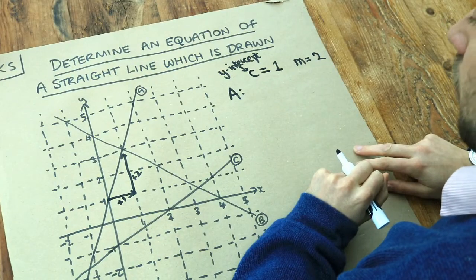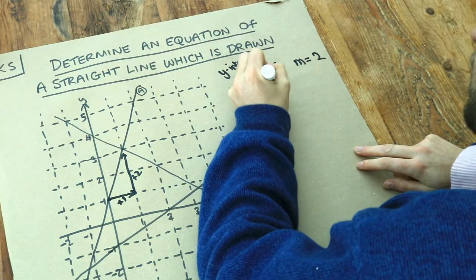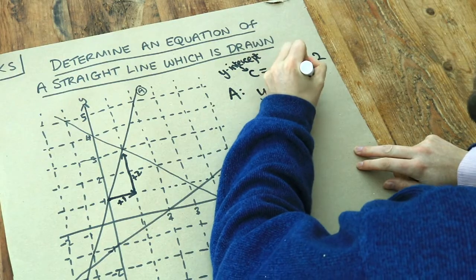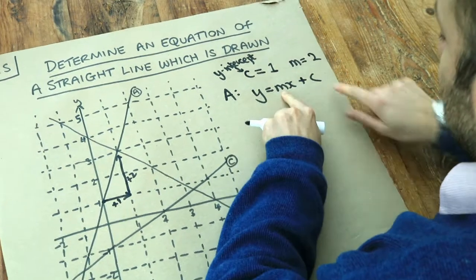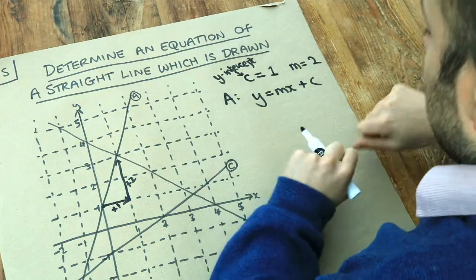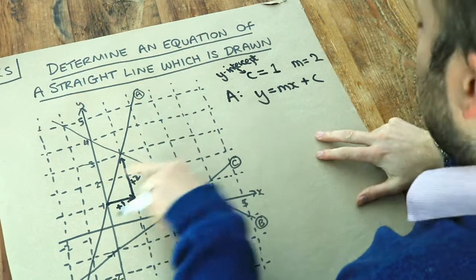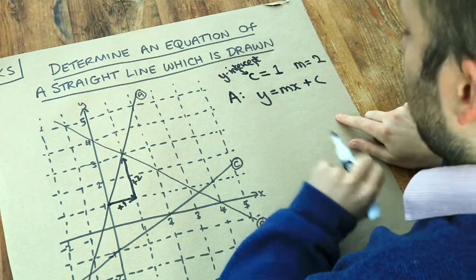Now the general equation of a straight line is y is equal to mx plus c. Now the M and the C are what are known as constants. They're fixed values for a particular line and they're the values we want to set for your line.